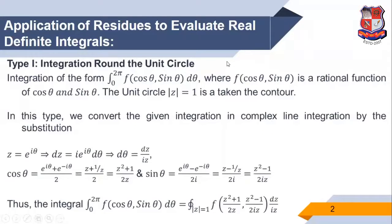There are different types of real integration and how to apply the residue theorem to different types of integrals. Type 1: the integration is around the unit circle. That means, if the integration is of the form ∫₀²π F(cosθ, sinθ) dθ, where F(cosθ, sinθ) is a rational function of cosθ and sinθ, the unit circle |z| = 1 is taken as the contour.